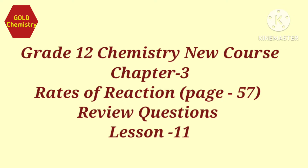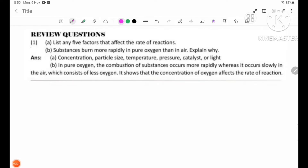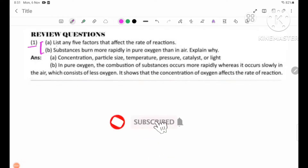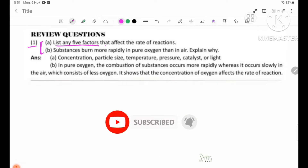Hello everyone. Today is the Great Toil Chemistry, Chapter 3, Page number 57, Review Questions. Review Question Number 1: List any 5 factors that affect the rate of reactions.